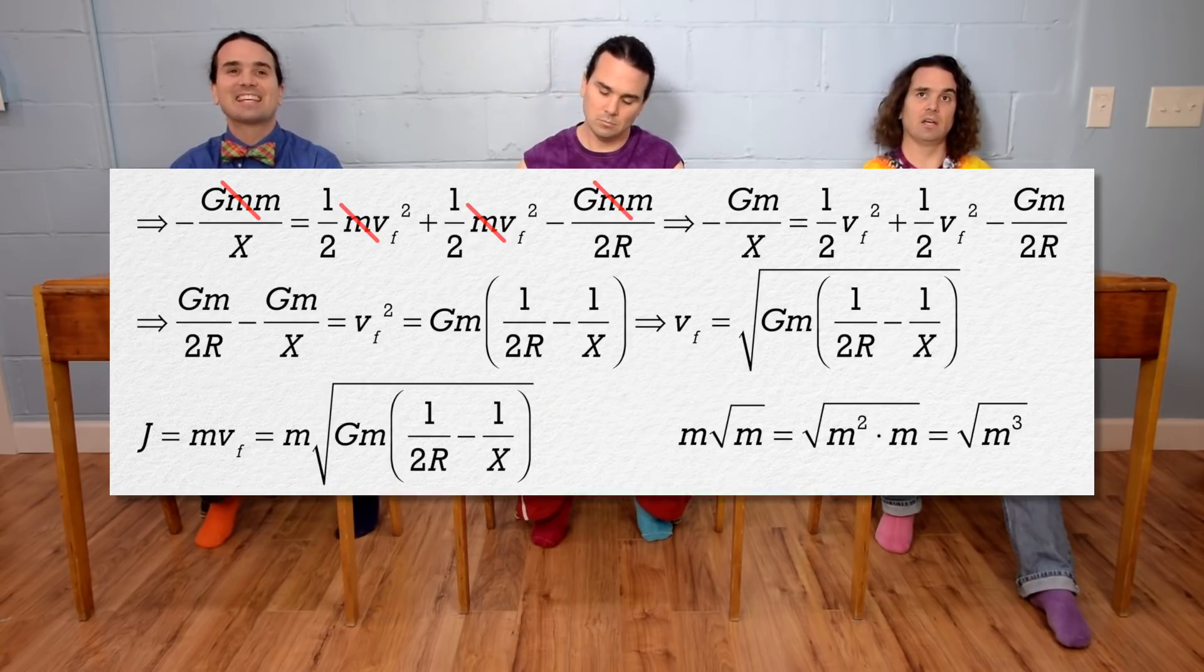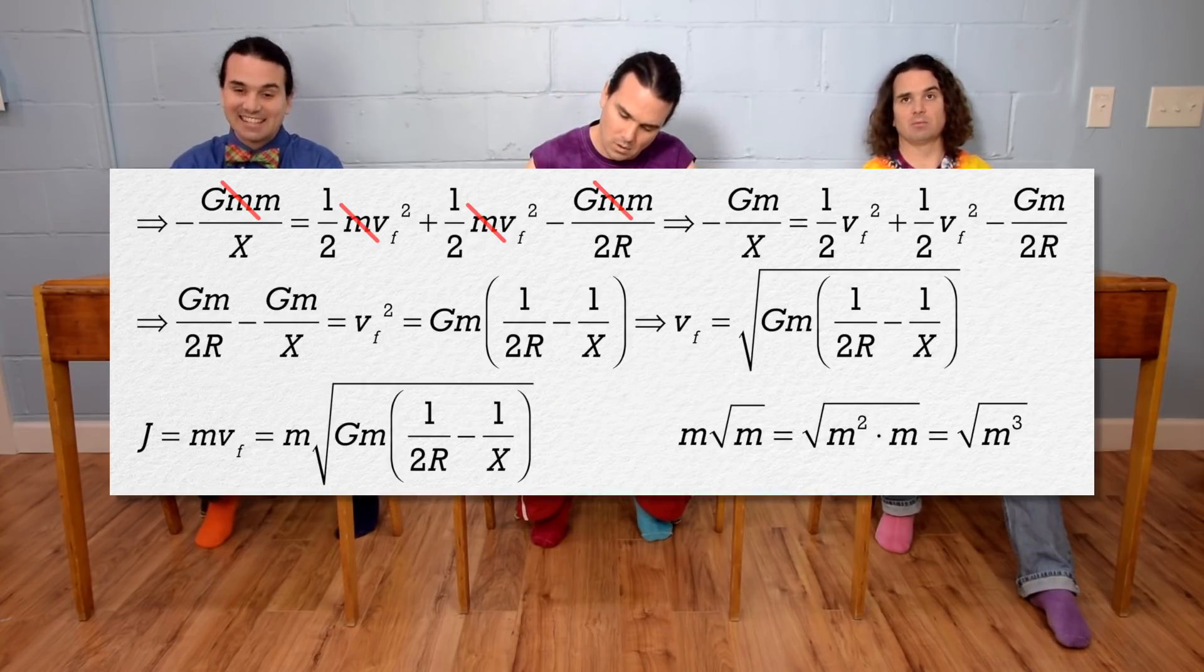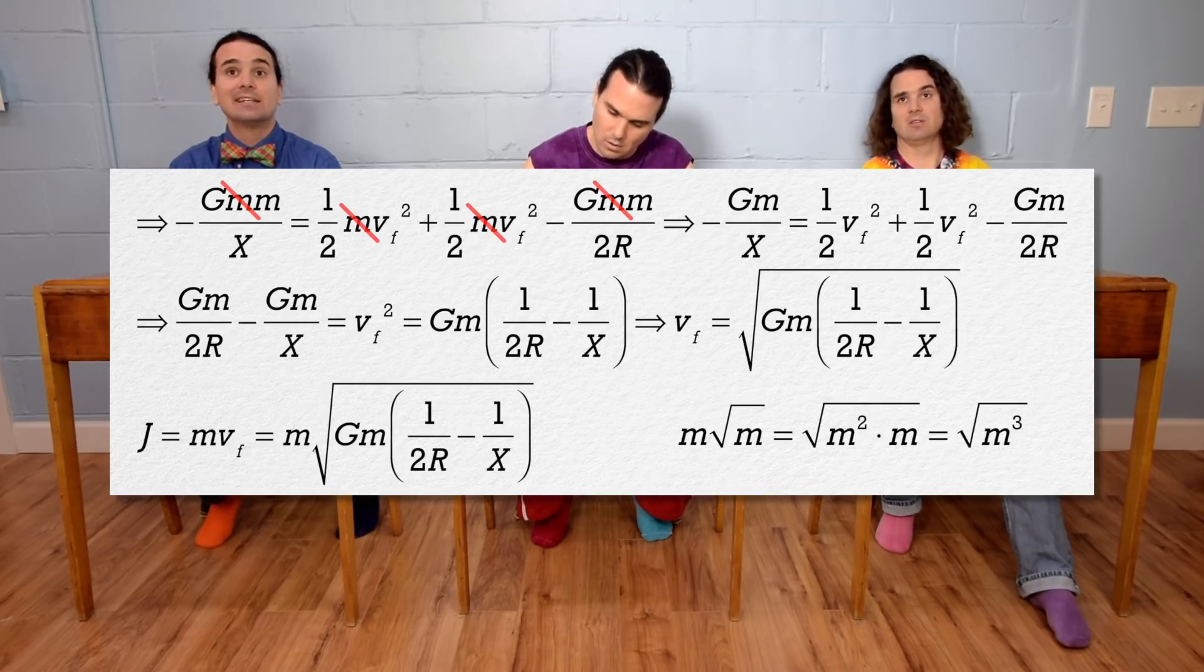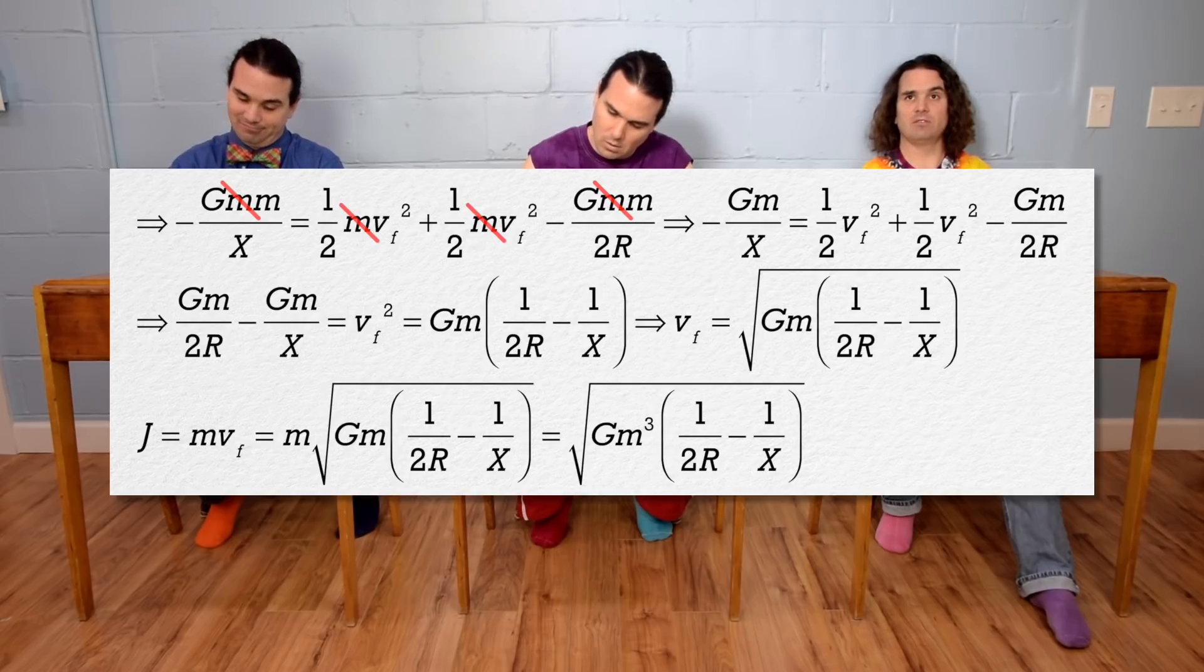When we do, it becomes mass squared, which multiplied by mass means it is mass cubed. And we have the impulse delivered to each sphere.